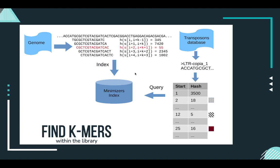In parallel, we have the transposons database — the curated library that we also use as input. Here, we break it into k-mers and for each k-mer we apply the same hashing function that we applied to the genome.